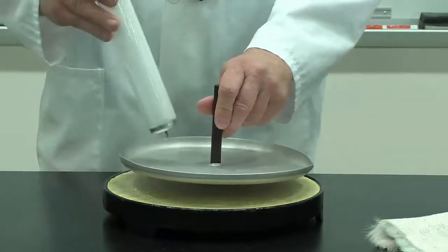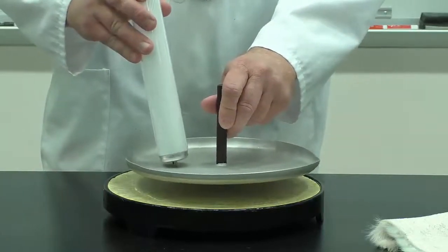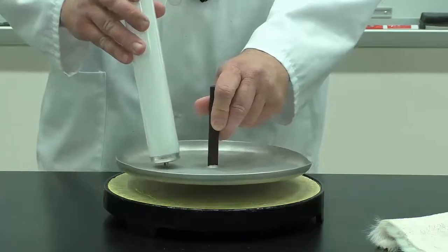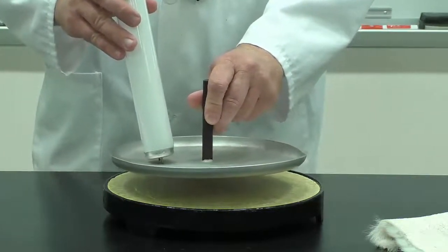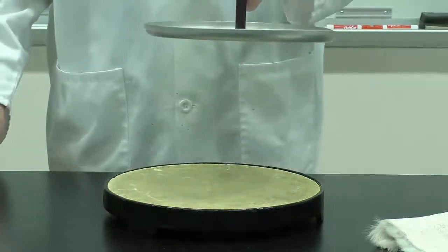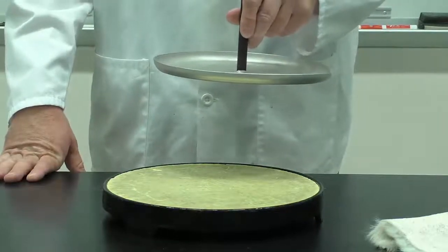So then if we touch the top of the plate with the fluorescent bulb, we'll take those negative charges off the plate, and now I have a positively charged plate.